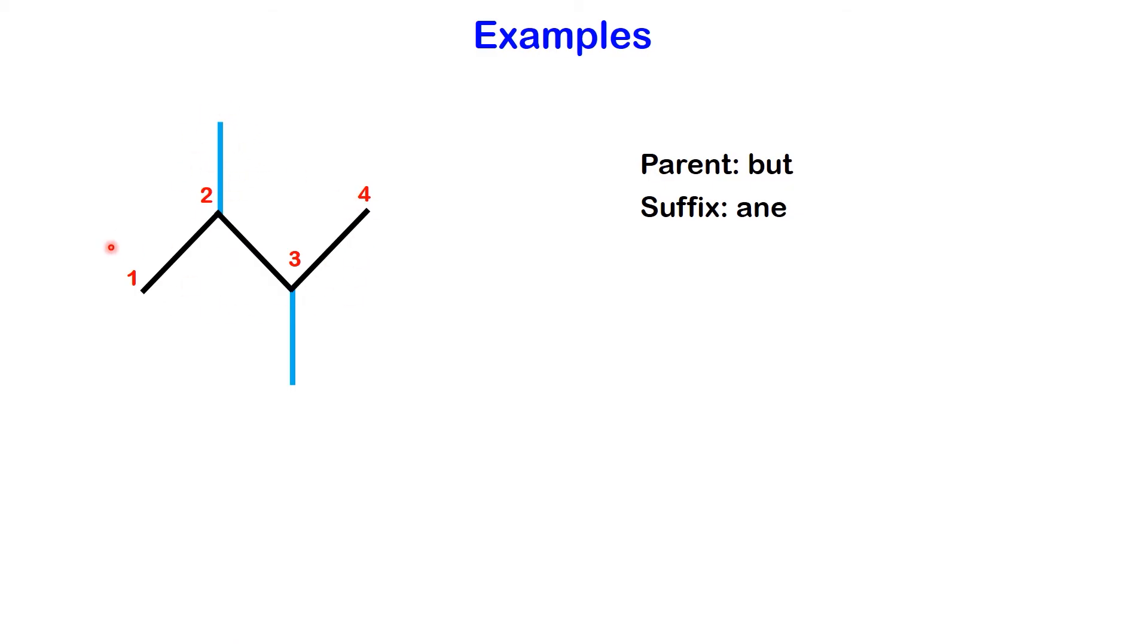In the above example, beginning from either end of the main chain, the first branch occurs at position two. In this case, whether starting from the left or right, both numberings are correct. Proceed to name the groups attached to the main chain. Here we have a methyl and another methyl.